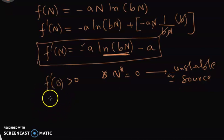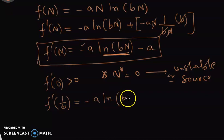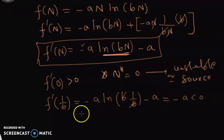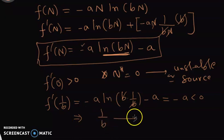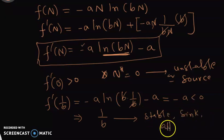Now we calculate f' at n equals one over b. This gives minus a times the natural log of b times one over b, minus a, which equals zero minus a, which is minus a. Since minus a is less than zero, this implies that the equilibrium n equals one over b is stable — it's a sink or attractor.